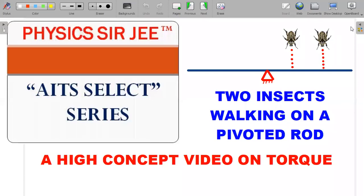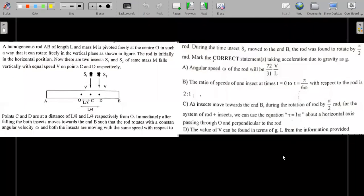Hey guys, welcome back to the channel Physics Sarji and this is AITS Select Series. As part of this series, in the last video I gave you a problem on rotation where two insects are falling onto the rod and after falling they start walking on this rod which is pivoted about its midpoint in the vertical plane.